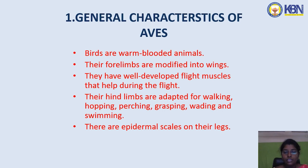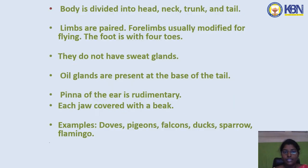There are epidermal scales on their legs. The body is divided into head, trunk, neck, and tail. Forelimbs are usually modified for flying. The foot has four toes. They do not have sweat glands. Oil glands are present at the base of the tail. The pinna of the ear is rudimentary.